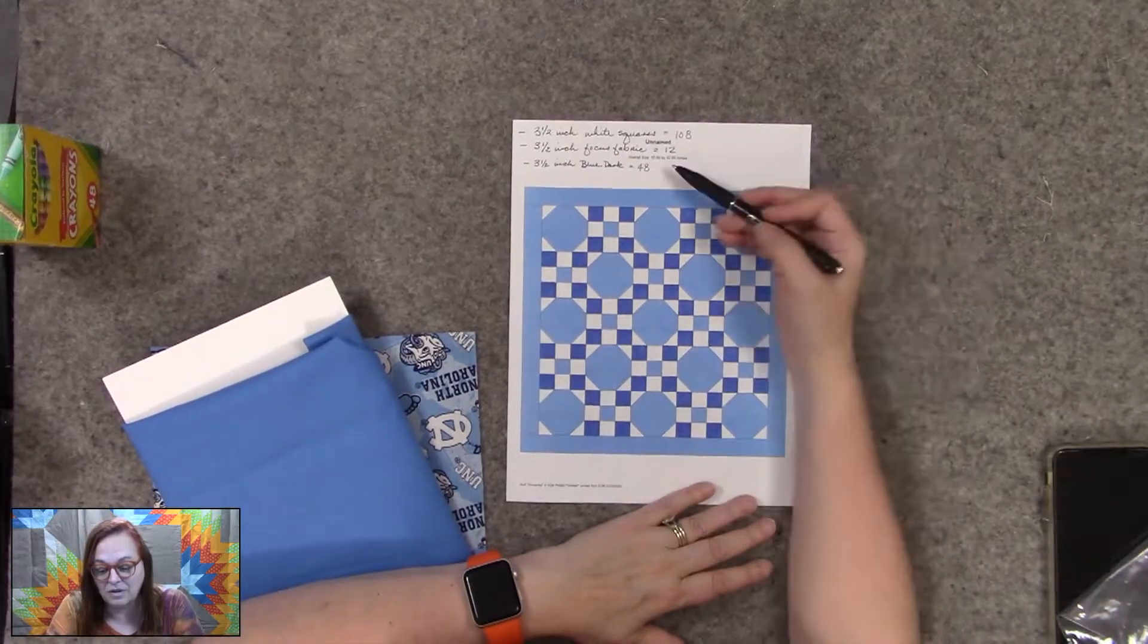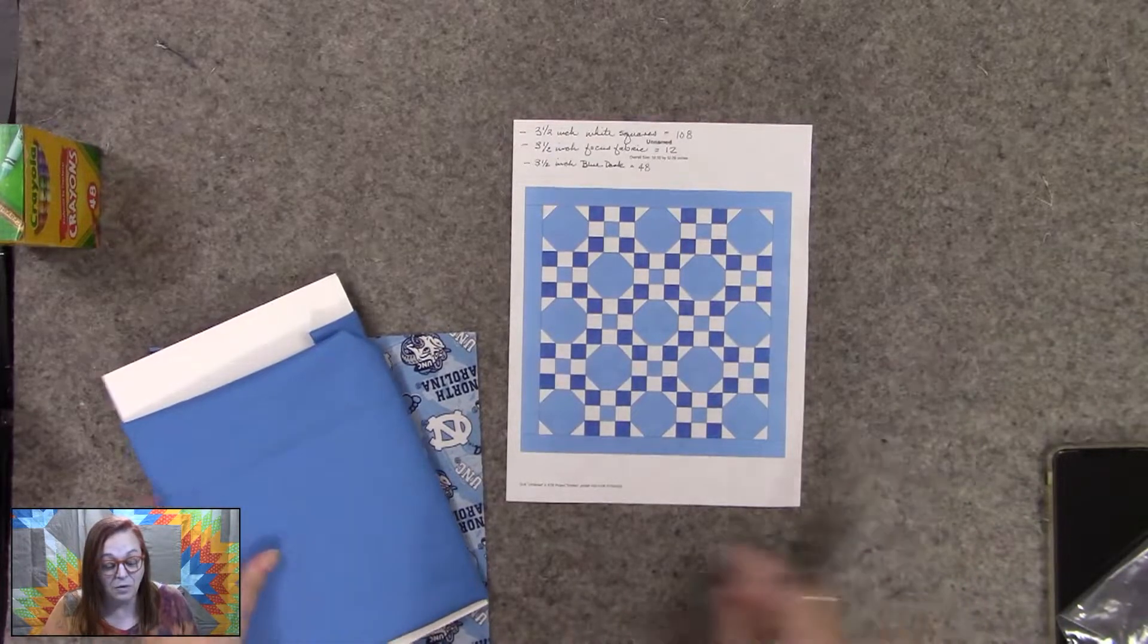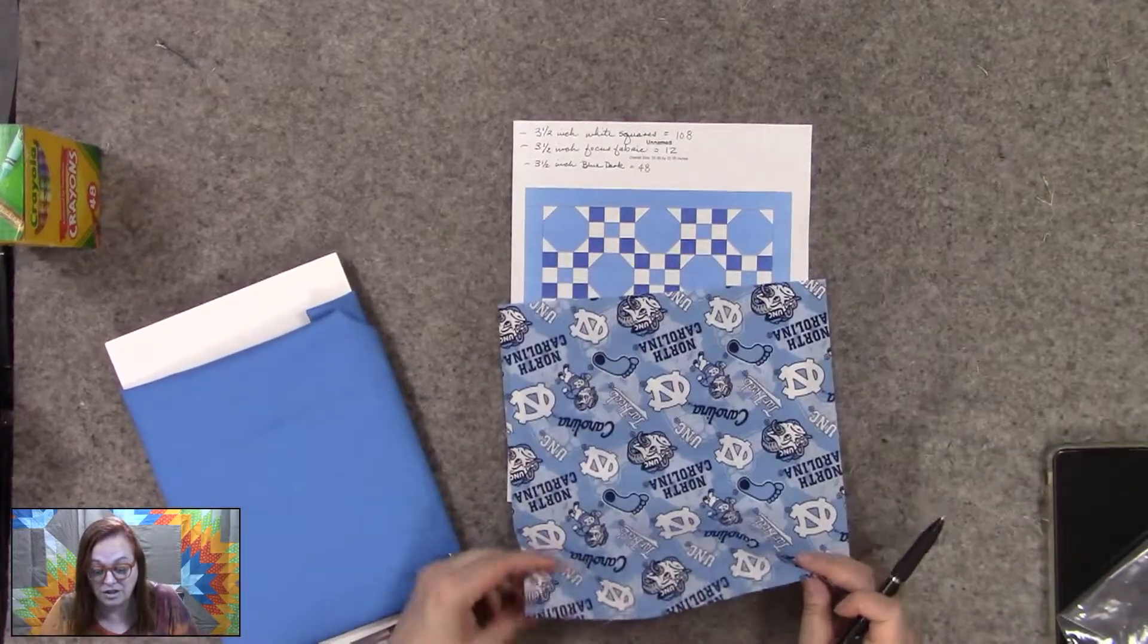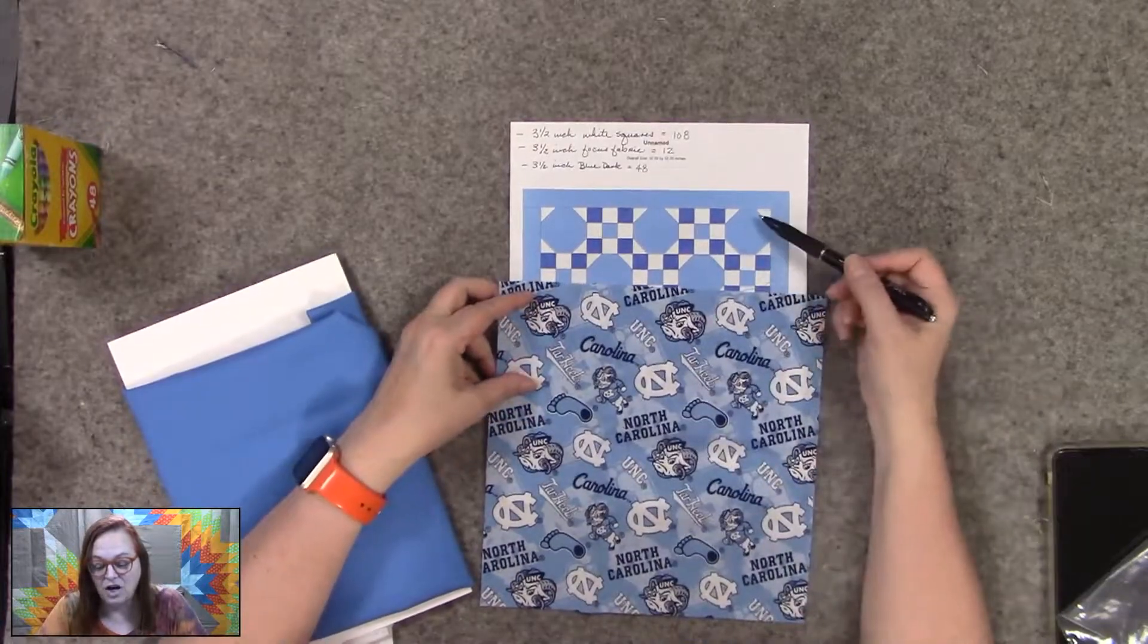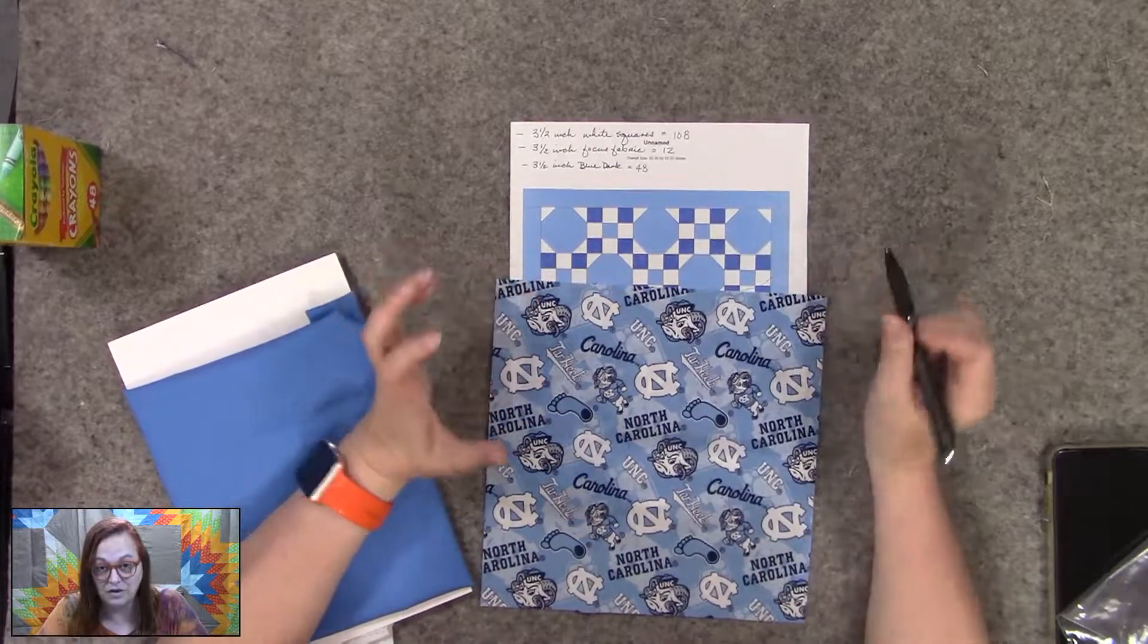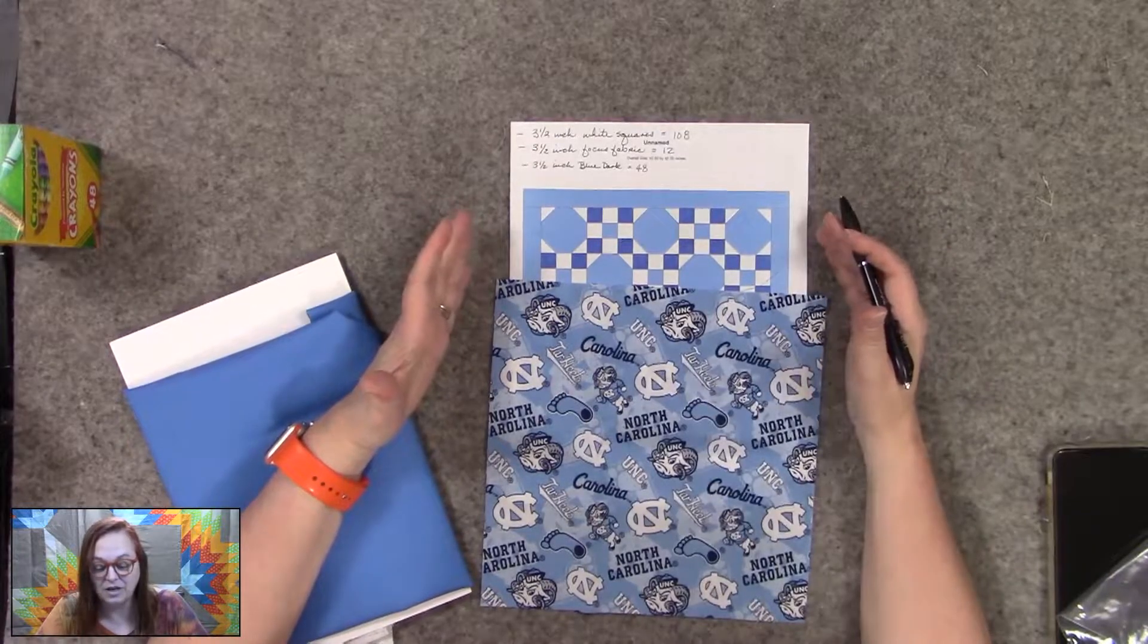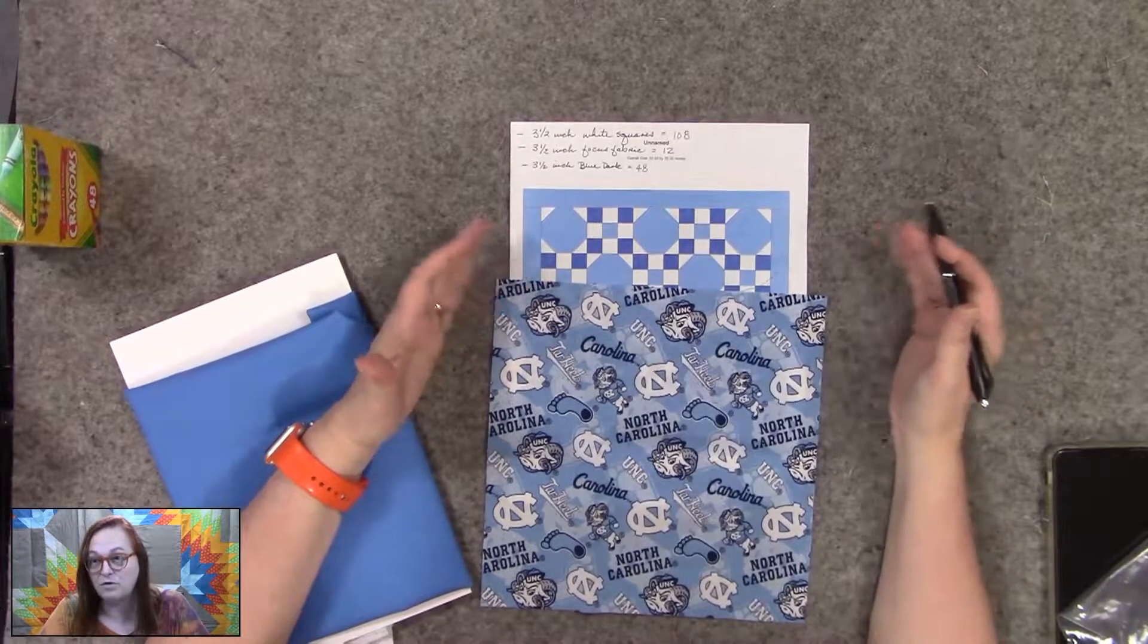So what I decided to do is I wanted about a 50 to 60 inch quilt. Now when I ordered the North Carolina fabric I only ordered two yards, so because I only had two yards I really had to limit myself on what I could do with the two yards.